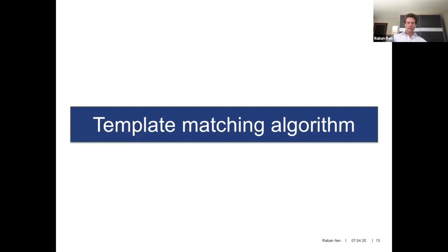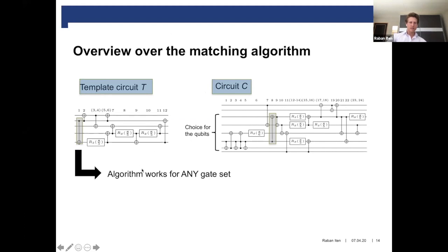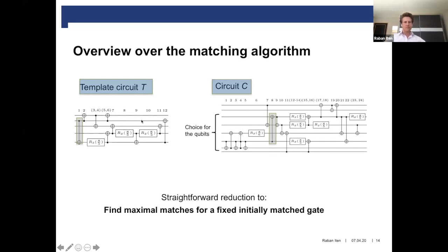The template matching algorithm now works in this picture. We go through an example because going through the full pseudocode would be too time consuming. In this example, we consider this template circuit and search for maximum matches in this quantum circuit. Our algorithm works for arbitrary gate sets. The task of template matching reduces to expanding an initial match — where we have matched one gate in the template with one gate in the circuit — to a maximum match.